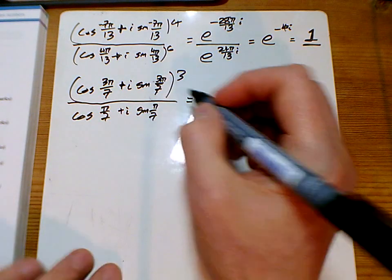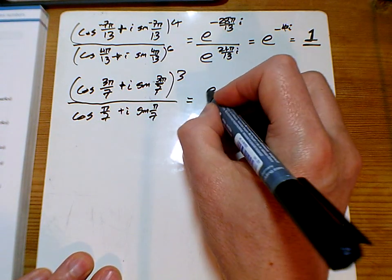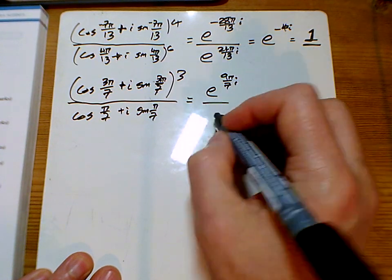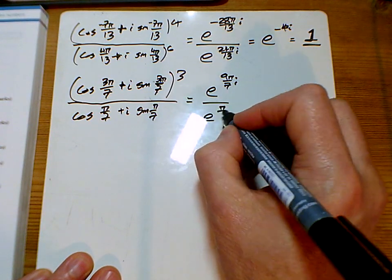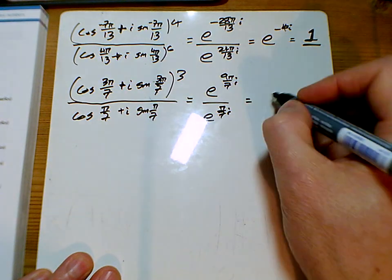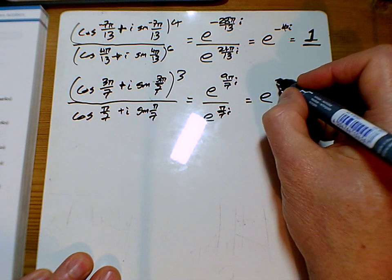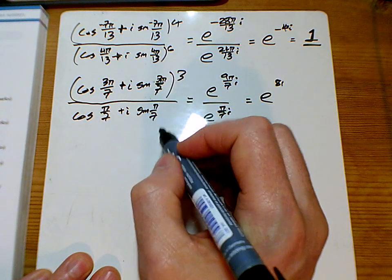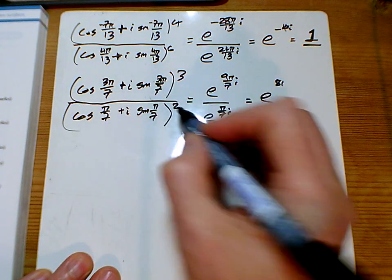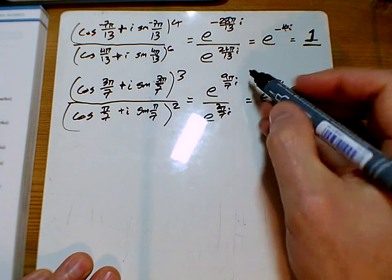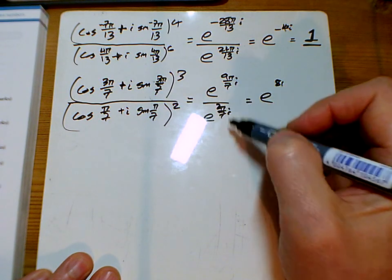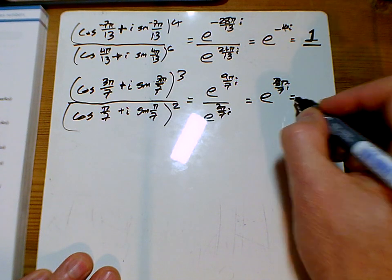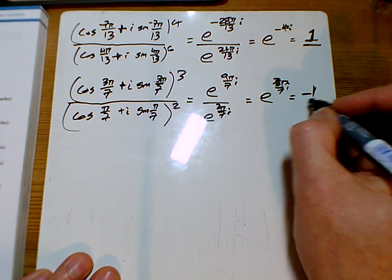So from there, we can now continue in the usual way. So this is e to the 9π over 7i. On the bottom, we've got e to the π over 7i. So taking them away, I've got e to the 8. No, that one's squared, isn't it? That one's squared on the bottom. Sorry. That one's squared, so I've got 2π. So 9π, take away 2π, is 7π over 7i. And so we're getting minus 1 for that one there.